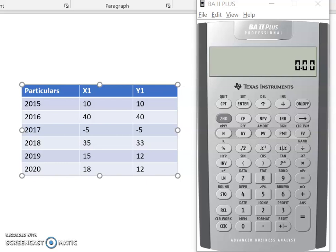In this video I'm going to calculate the correlation coefficient between two stocks, X1 and Y1, which have their annual returns between 2015 to 2020.